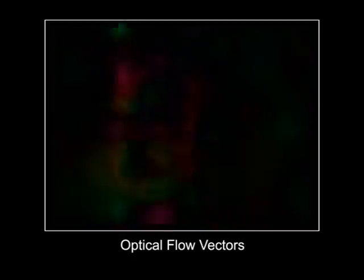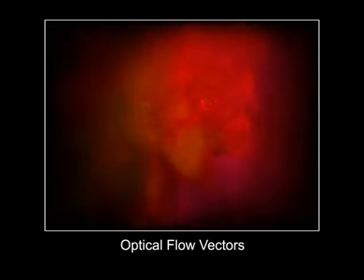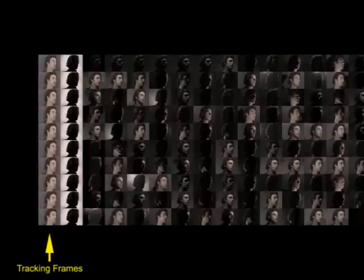Since our subject moves during the basis, we need to align the frames using image warping. Failing to do this can produce image smearing, as seen in this non-motion compensated video. We detect and compensate for this motion using optical flow. Since performing optical flow between differently illuminated frames is difficult, we insert diffusely lit tracking frames at several times the target frame rate to improve the tracking results.